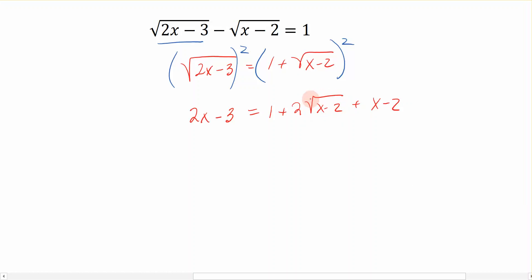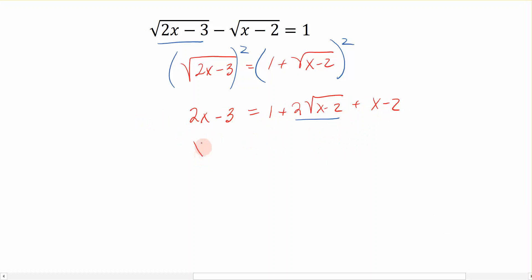Now I isolate the remaining radical by moving all other terms to the left-hand side. Taking the x over gives 2x minus x, which is just x. The constants 1 minus 2 give negative 1, so negative 3 plus 1 equals negative 2. This simplifies to: x minus 2 equals 2 times the square root of x minus 2. We now have only one radical in the equation.